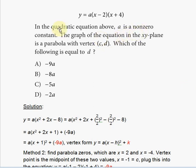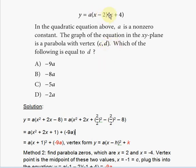The problem gives you a quadratic equation and says: in the quadratic equation above, a is a nonzero constant. The graph of the equation in the XY plane is a parabola with vertex (c, d). Which of the following is equal to D?